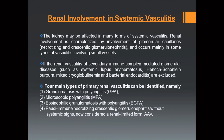The kidney may be affected in many forms of systemic vasculitis. Renal involvement is characterized by involvement of glomerular capillaries and occurs mainly in small vessel vasculitis. If secondary immune-complex mediated glomerular diseases like SLE, HSP, cryoglobulinemia, and bacterial endocarditis are excluded, four primary vasculitis types can be identified: granulomatosis with polyangiitis (formerly Wegener's), microscopic polyangiitis, eosinophilic granulomatosis with polyangiitis (formerly Churg-Strauss syndrome), and pauci-immune necrotizing crescentic glomerulonephritis without systemic signs, now considered a renal-limited variant.